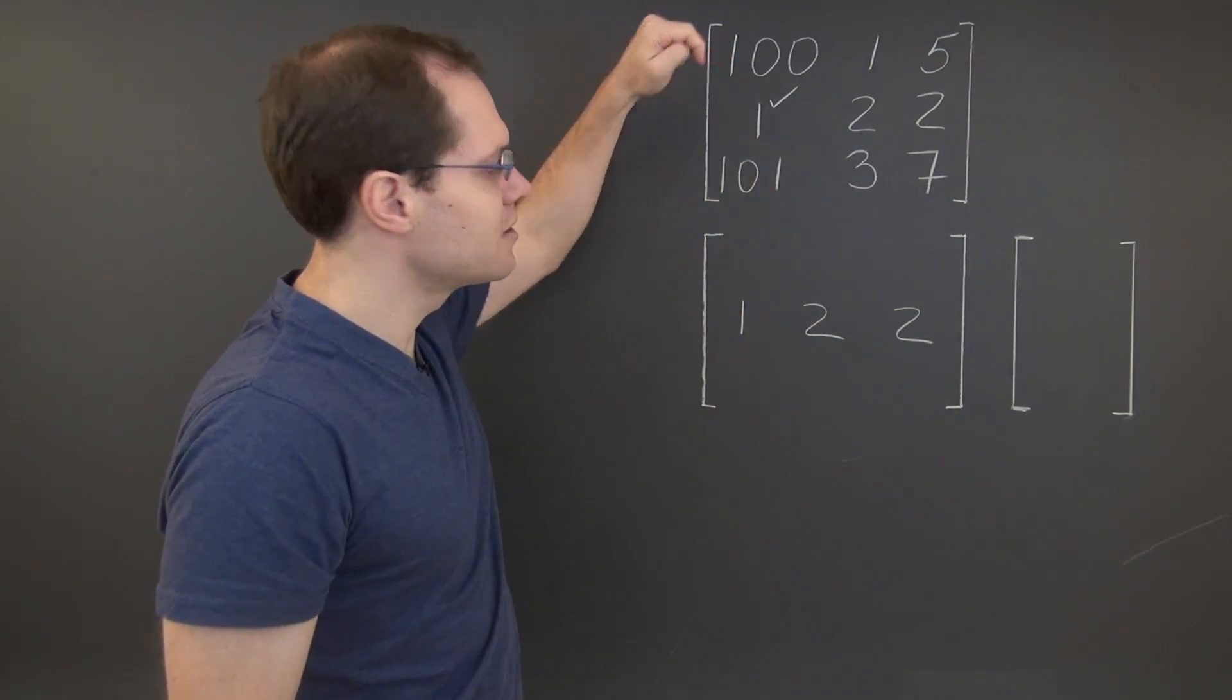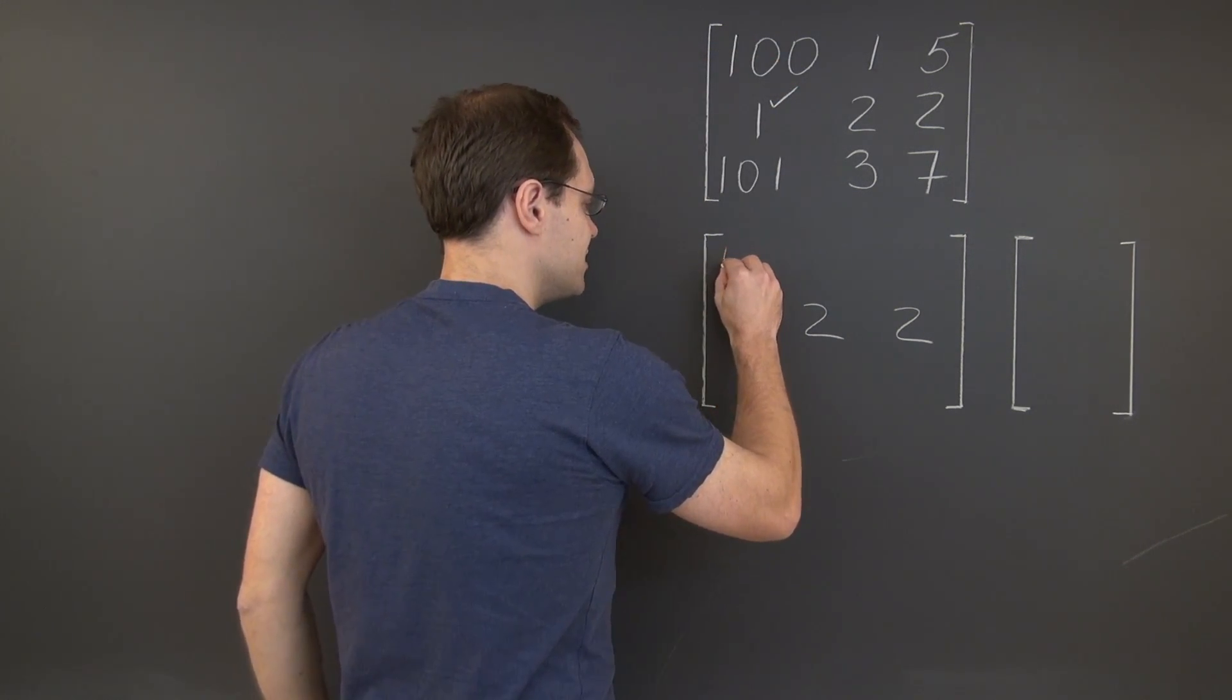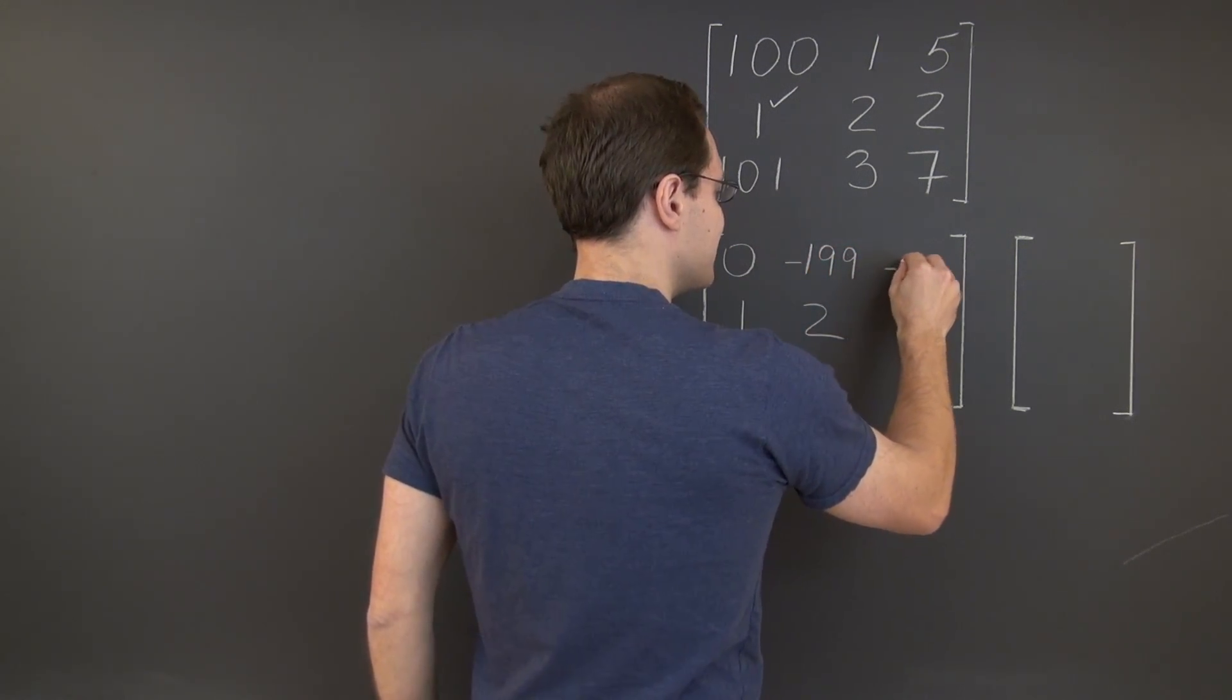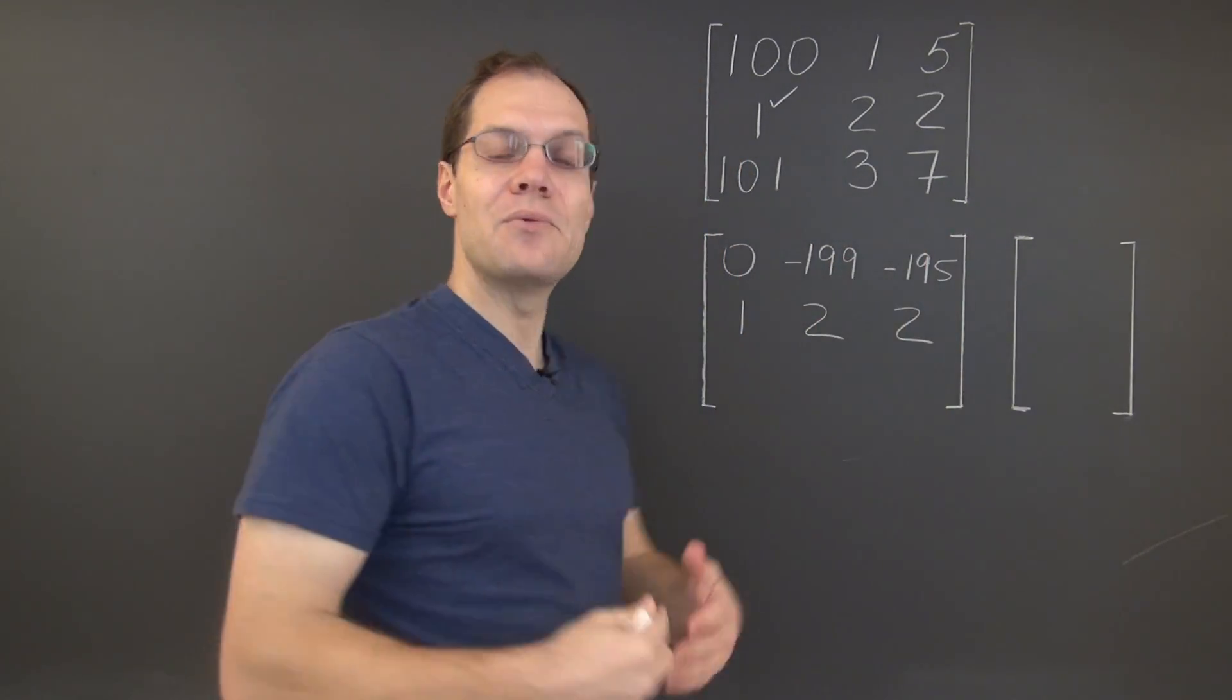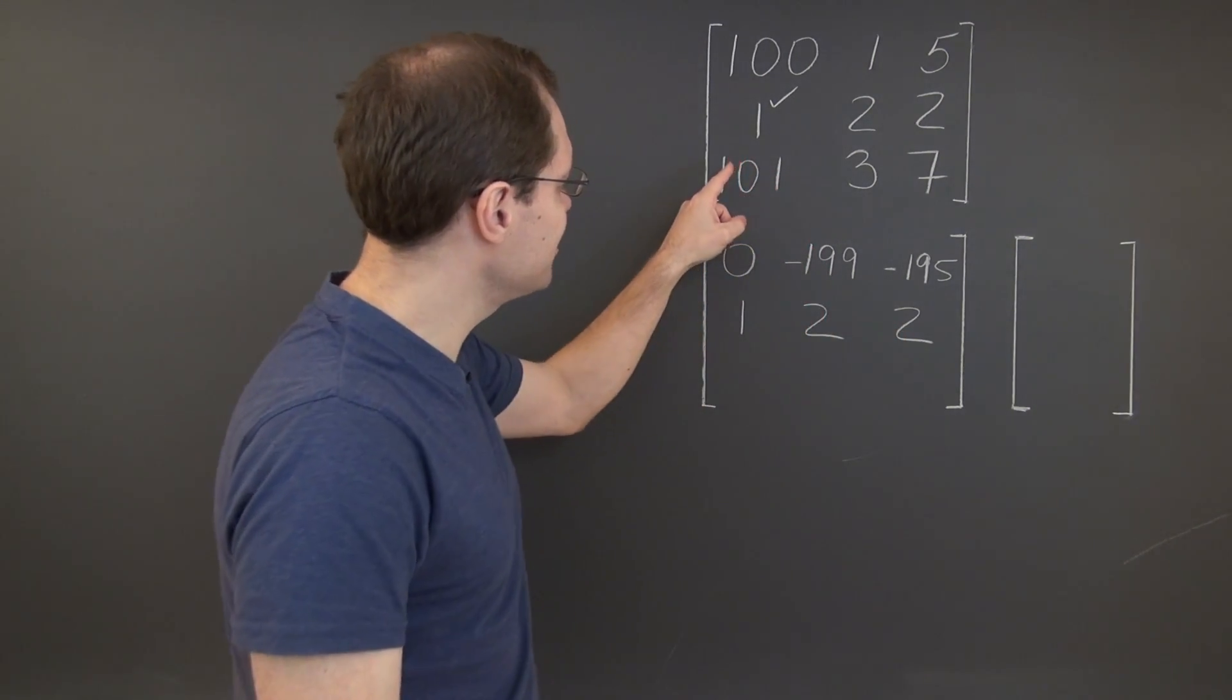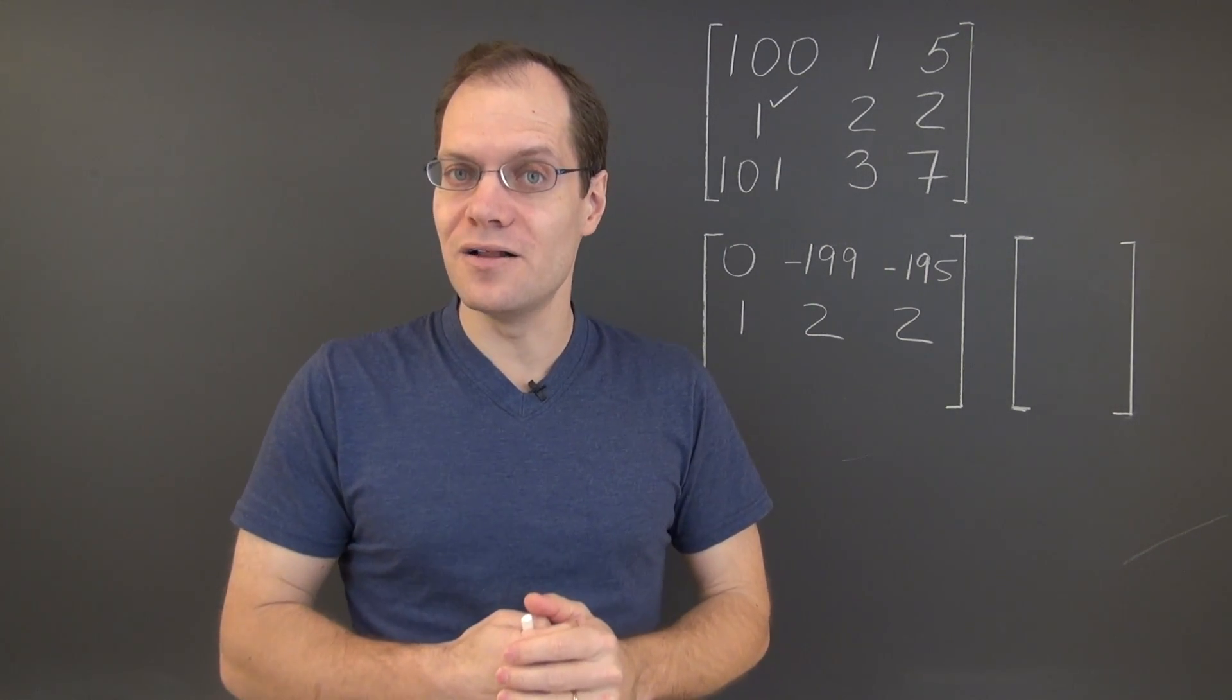But we'll eliminate this 100 by subtracting 100 of the second row from the first, leaving us with 0 right here, minus 199 and minus 195. Now with a little bit of experience, you will know that you can actually stop right here. But let's actually eliminate this 101 and we will get something that in retrospect will not be surprising at all.